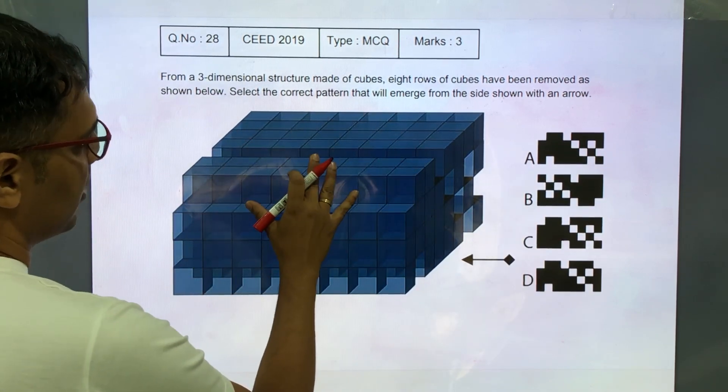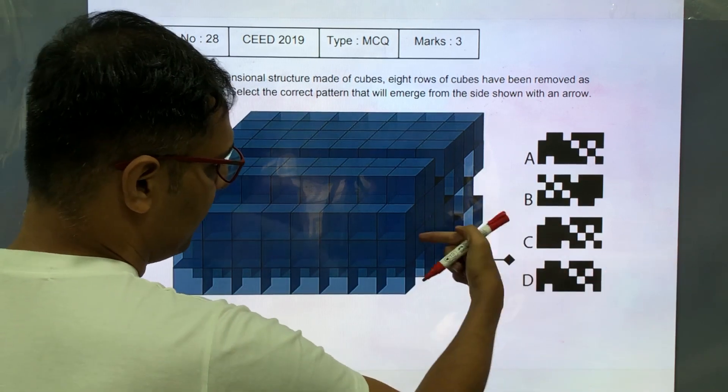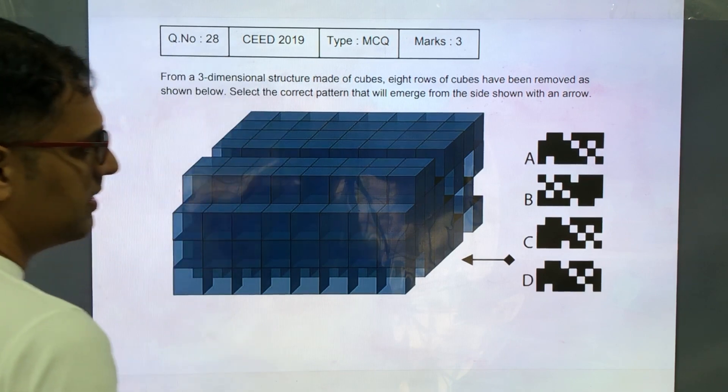So this is the structure, 8 rows have been removed and when seen from this side, we want to find out what is the pattern that will be seen.